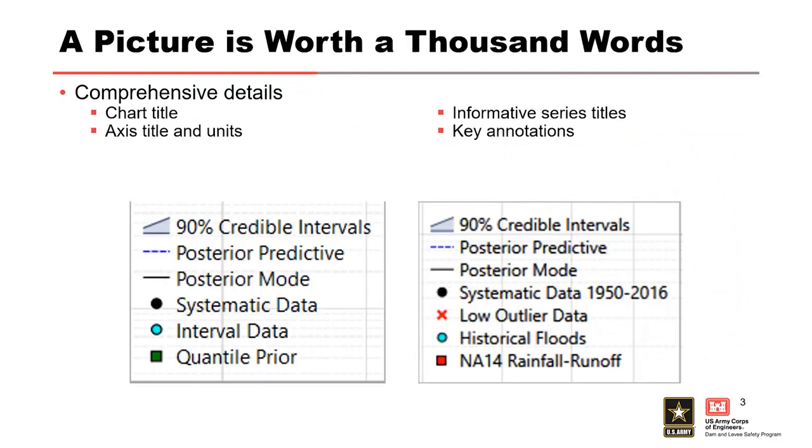Items to consider when creating a report graphic include things such as plot title, axis titles with units if appropriate, series titles, and key annotations. Take these two legends for example.